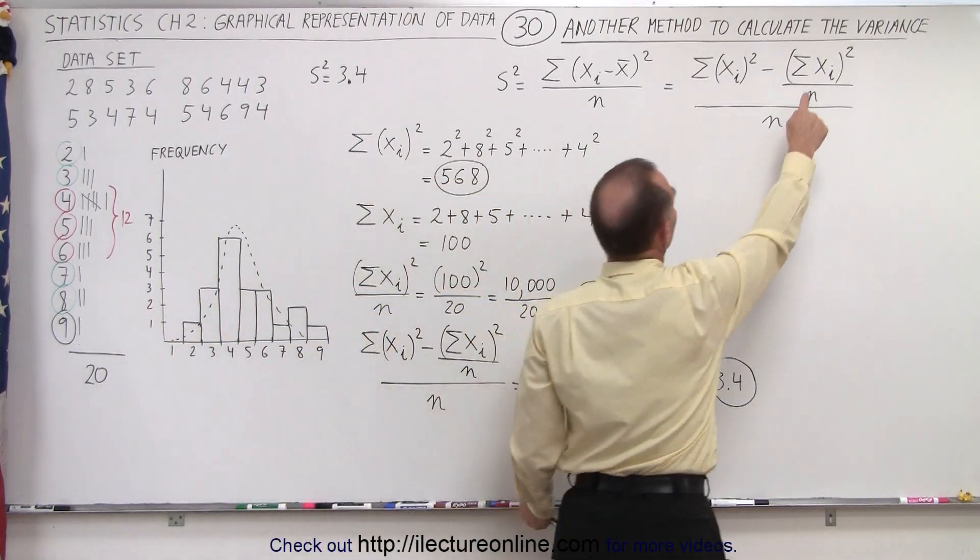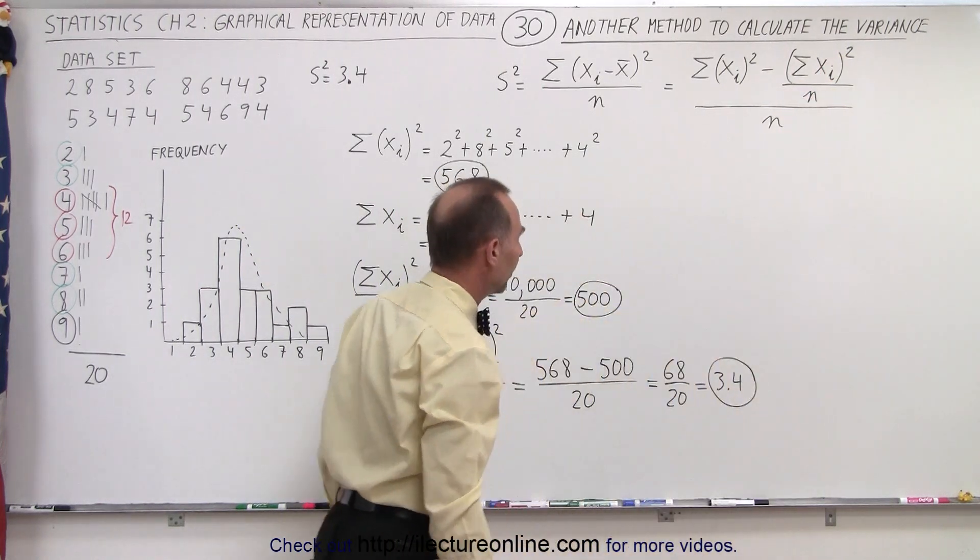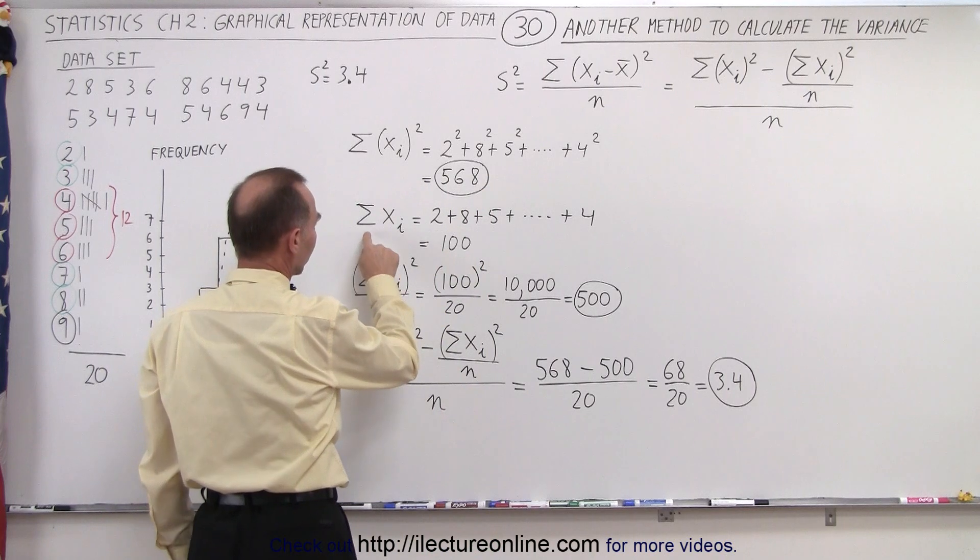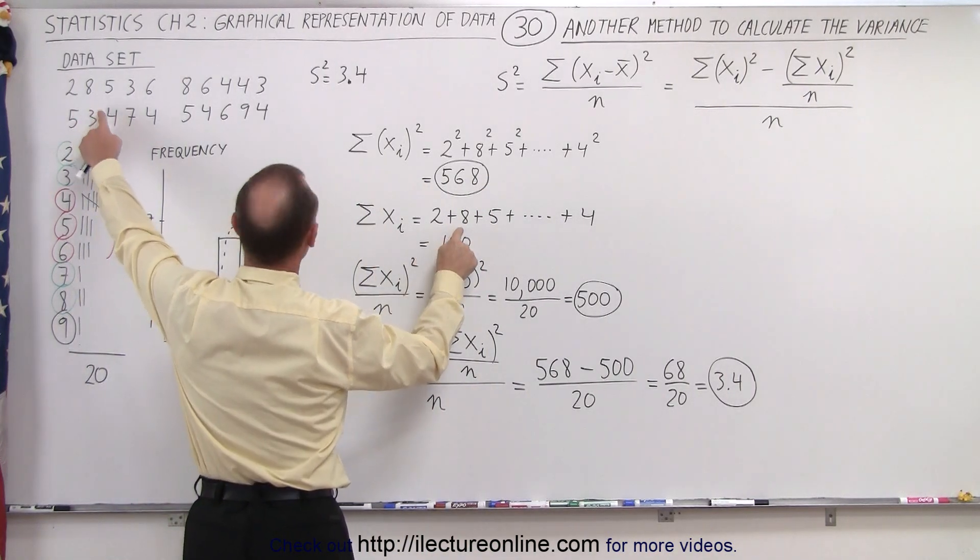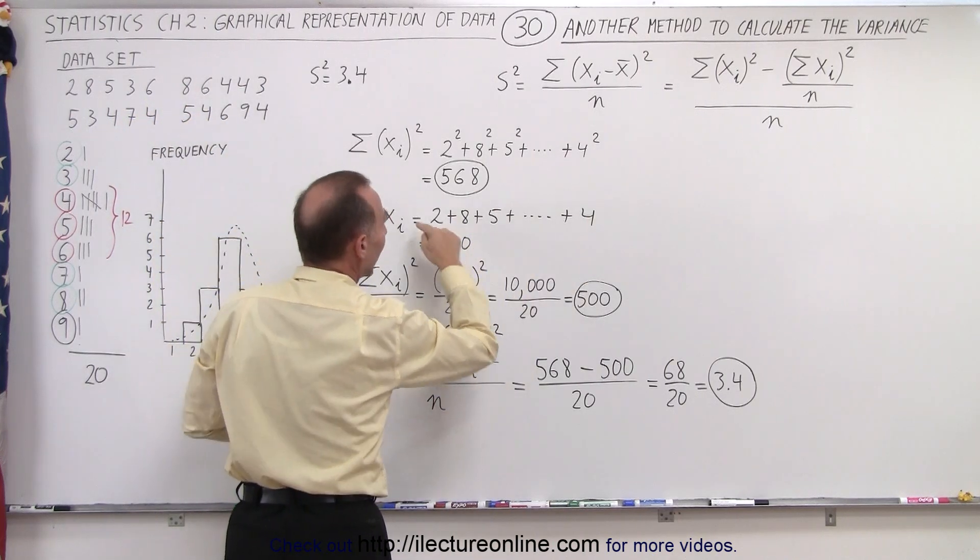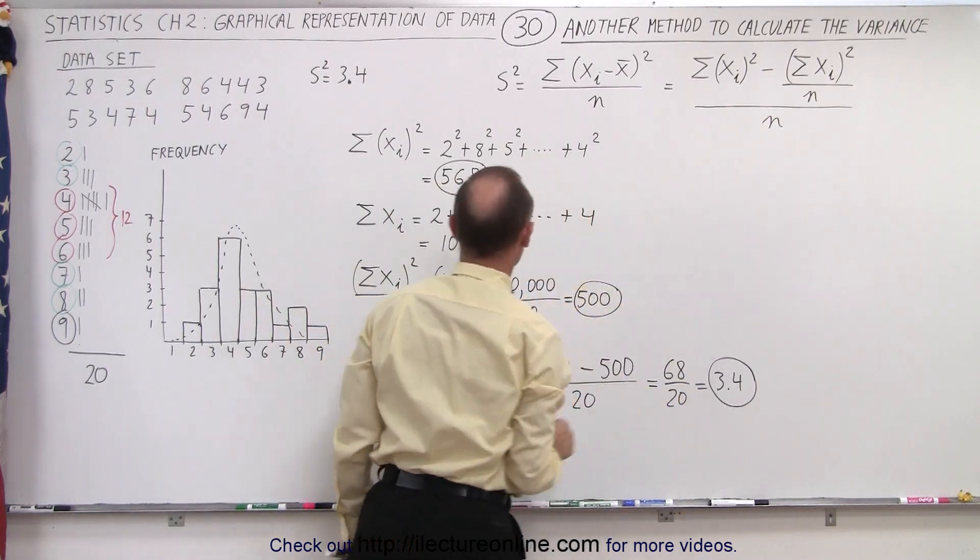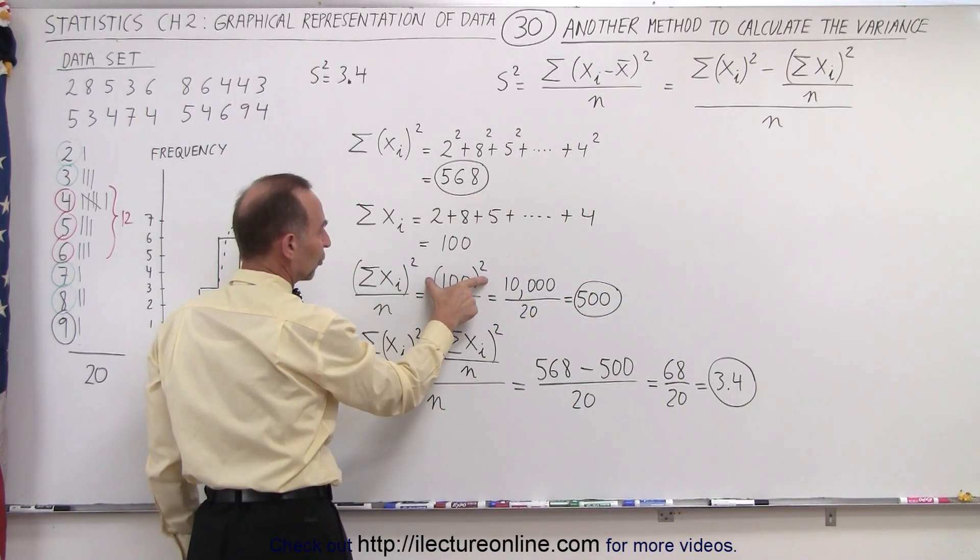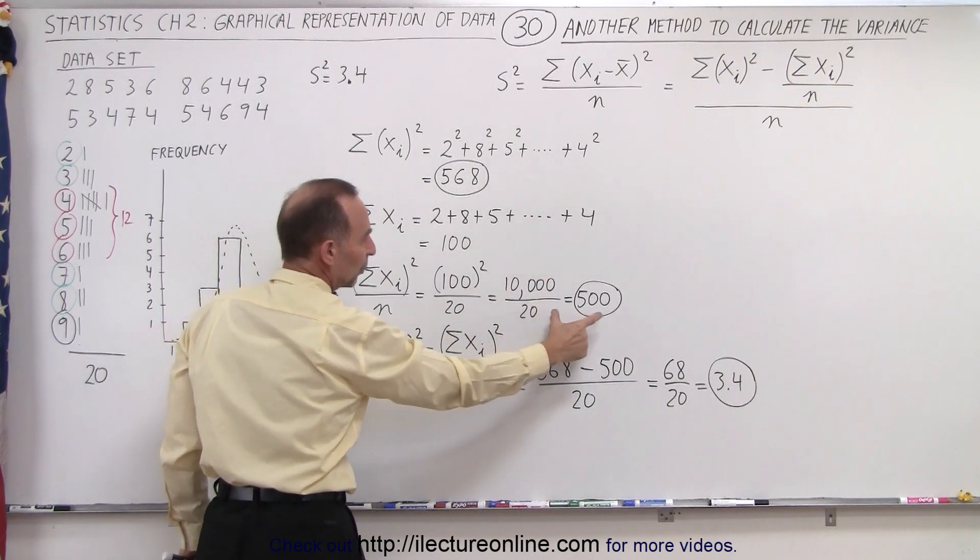Then we're going to sum up all the data points, square that amount, and divide by the number of data points. So first we sum all the data points: 2 plus 8 plus 5 plus 3 plus 6, and so forth, all the way down to plus 4. When you add them all up you get 100. Now you need to square that and divide it by the number of data points. So we have 100 squared divided by 20 data points, that's 10,000 divided by 20, which is 500.